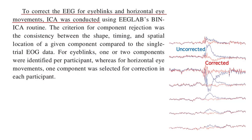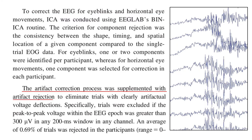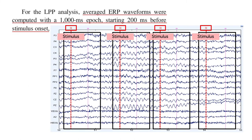Felix then applied ICA artifact correction to subtract away voltages from blinks and small eye movements, and then he used artifact rejection to throw out the small number of trials that had other kinds of artifacts. The next step was to extract fixed-duration epochs, time-locked to each CS stimulus. Felix used a 1000 ms epoch that included a 200 ms pre-stimulus baseline period.